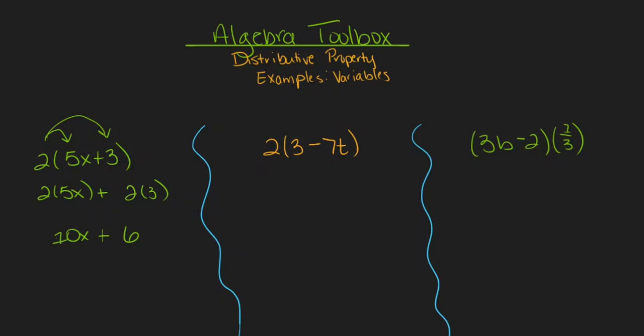Let's take a look at the second example. I have 2 times the quantity 3 minus 7t. Again, I can distribute this 2 into both parts of the expression in parentheses. So I can think of this as 2 times 3 minus 2 times 7t. 2 times 3 is 6. I'll keep my subtraction symbol, and then 2 times 7t is 14t. So that means I can rewrite this expression as 6 minus 14t.